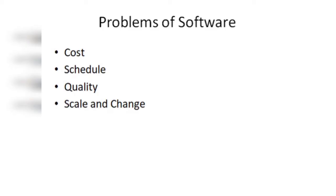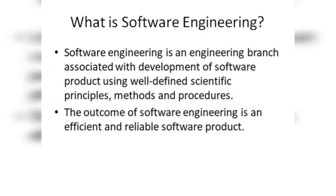Now, what is engineering? Engineering is all about developing products, but सिर्फ products develop करना काफी नहीं है। हमें उसको एक well-defined format में produce करना है — scientific principles, scientific methods, और structured systems use करने हैं। अगर हम इन well-defined, well-formatted structures को use करके कोई product develop करते हैं, then it is known as engineering. So software engineering is a branch of engineering which helps us in developing a software product using well-defined scientific principles, methods, and procedures.